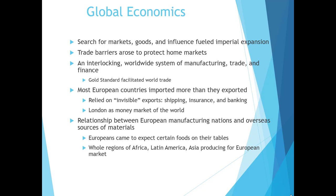Using the gold standard worldwide facilitated world trade. Most European countries were importing more than they exported, but they relied on invisible exports — shipping, insurance, and banking — to make up the difference. London became the banking capital of the world. The relationship between European manufacturing nations and overseas sources of materials was complicated — Europeans expected fresh vegetables and fruits not always available domestically, so they came from Asia and other places, while whole regions of Africa, Latin America, and Asia produced strictly for the European market.